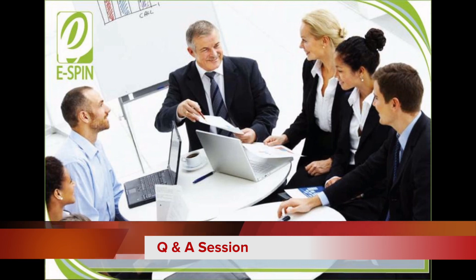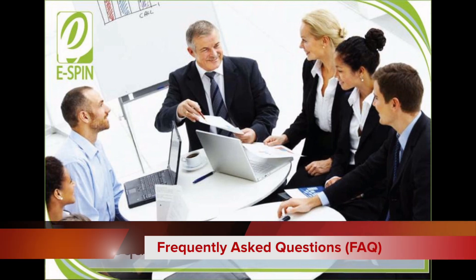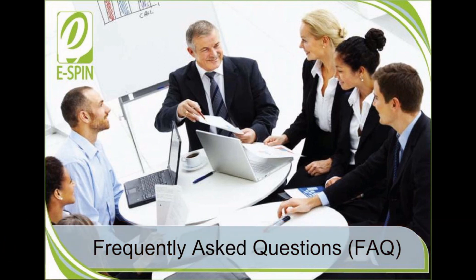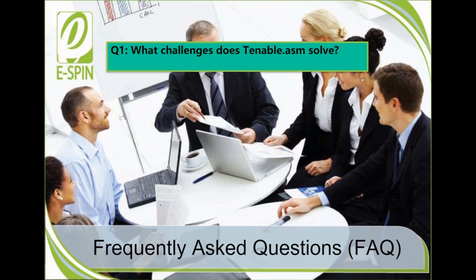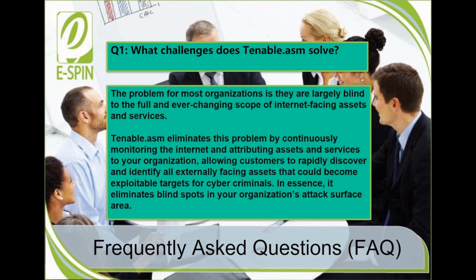Finally, we have arrived at the Q&A session. Before that, let's look at a few frequently asked questions. Question 1: What challenges does Tenable ASM solve? The problem for most organizations is they are largely blind to the full and ever-changing scope of internet-facing assets and services. Tenable ASM eliminates this problem by continuously monitoring the internet and attributing assets and services to your organization, allowing customers to rapidly discover all externally facing assets that could become exploitable targets for cyber criminals — eliminating blind spots in your organization's attack surface.